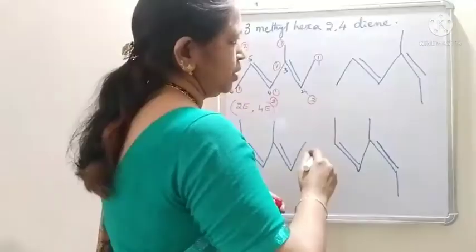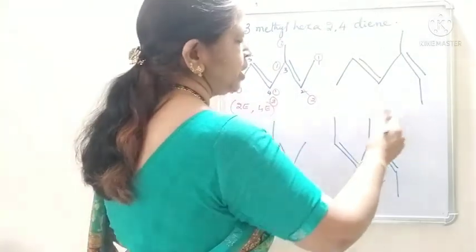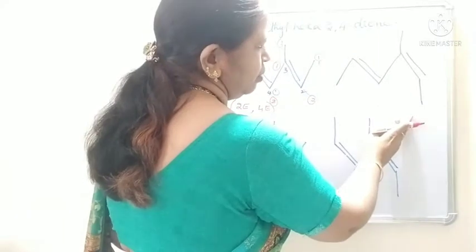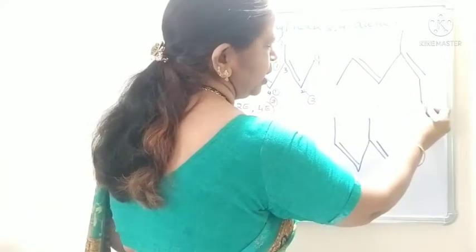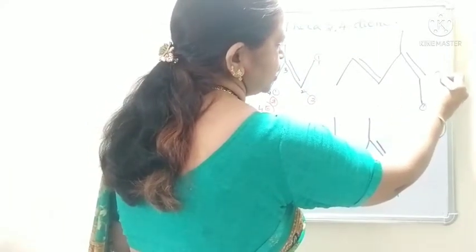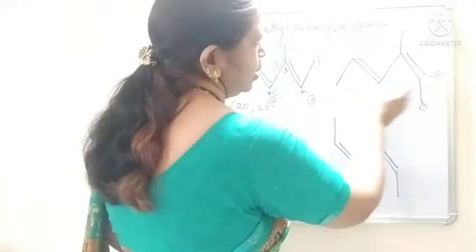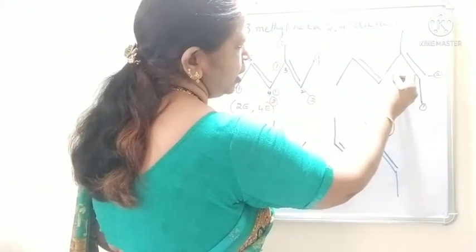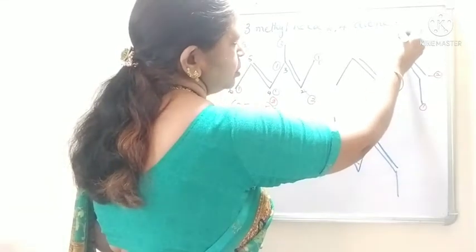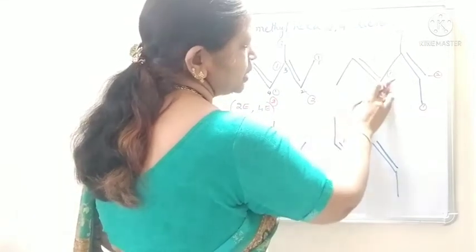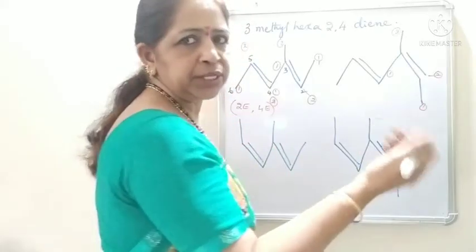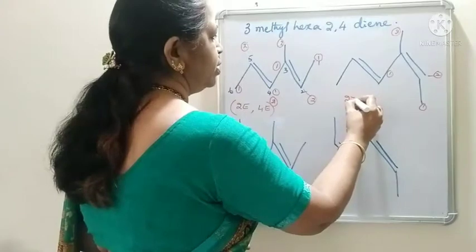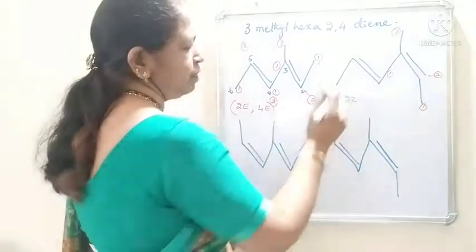Coming to the next structure — the name will be the same. On the second carbon, the methyl group is coming down. The first priority goes to the methyl group and hydrogen is second priority on the upside. This entire group is coming down. The first priority and methyl group, second priority — first priority groups are lying on the same side. So, what is the configuration? It will be Z — 2Z. On second carbon, Z configuration.